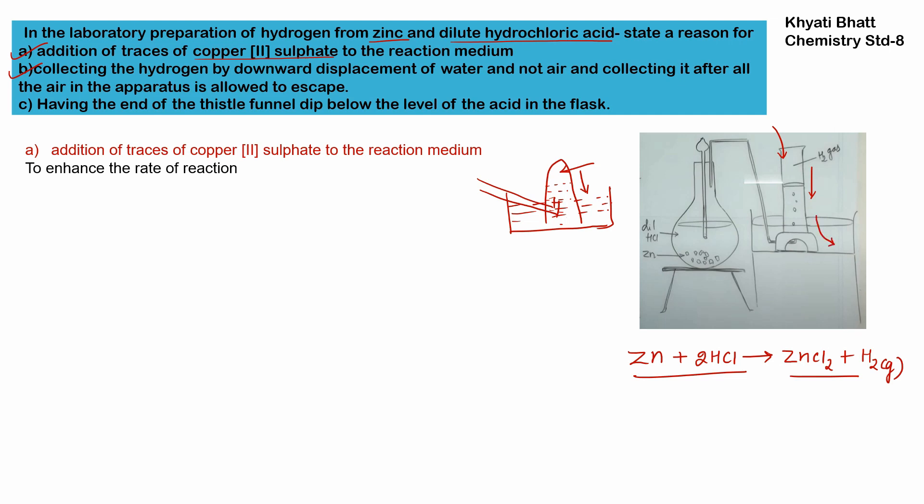This process is known as downward displacement of water. When the process starts, water is present in the gas jar. As hydrogen is produced and enters as a product, it takes the place of water, slowly pushing the water down. That is why it is called downward displacement of water.